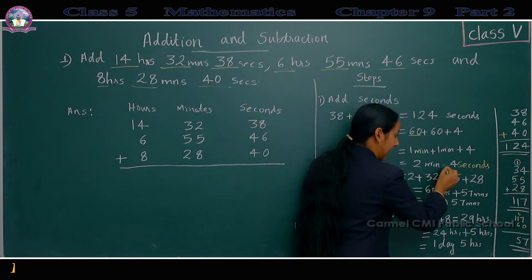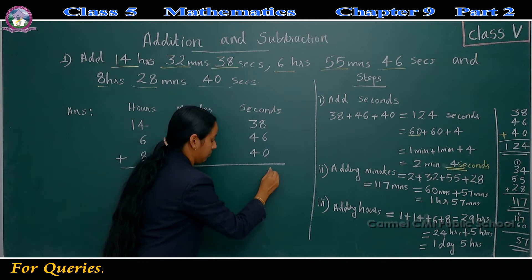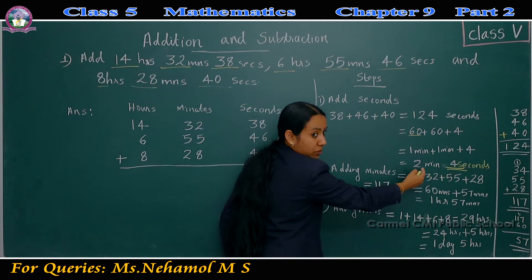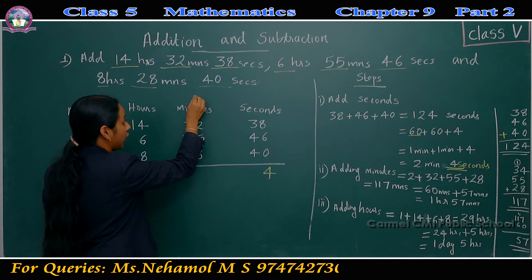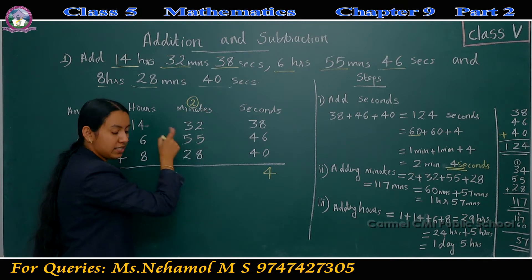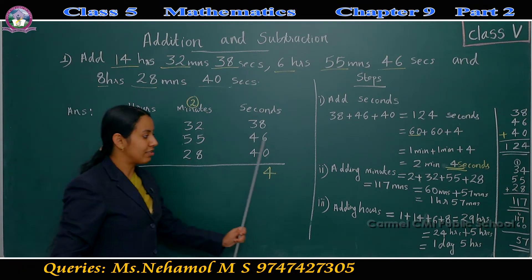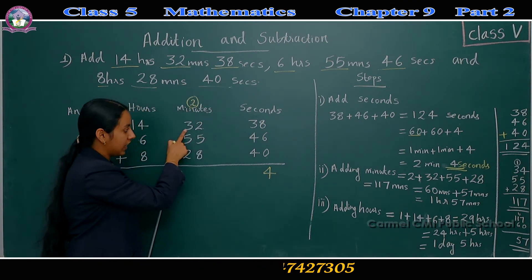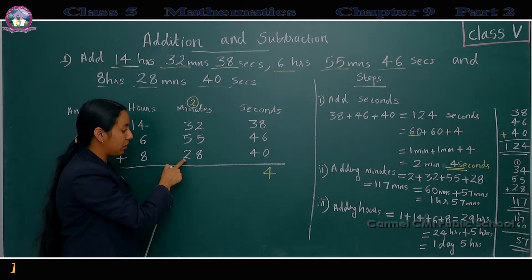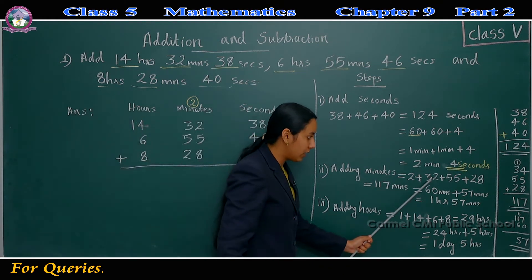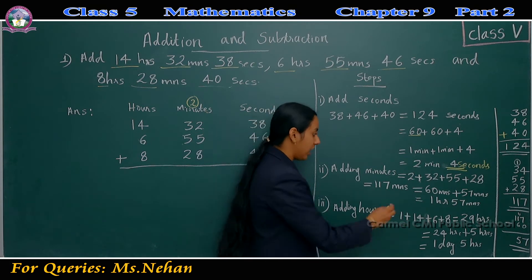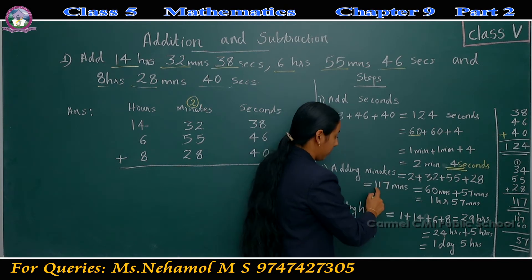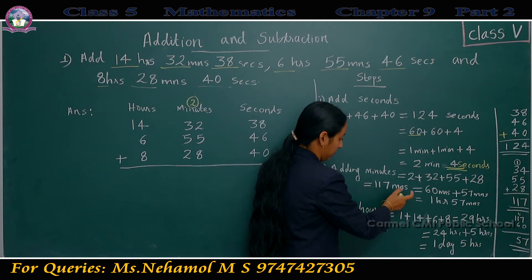We write 4 in the seconds column. There are also 2 carry minutes to add. Second step: adding minutes. 2 plus 32 plus 55 plus 28 — adding all these numbers, we get 117 minutes.